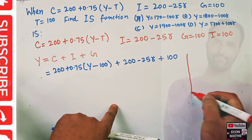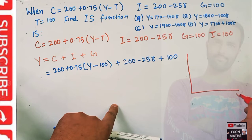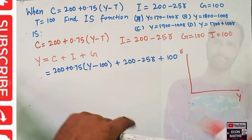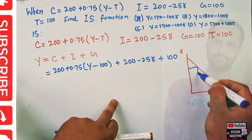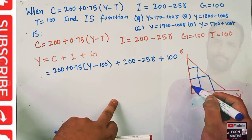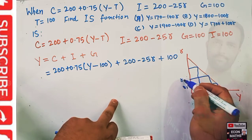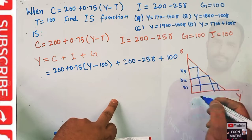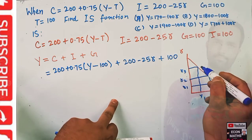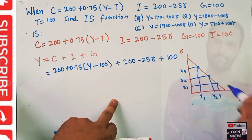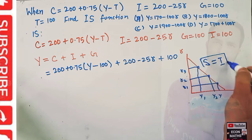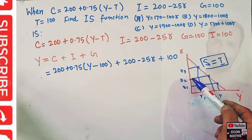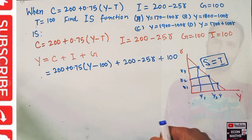The IS curve shows the level of income or GDP on the horizontal axis and rate of interest on the vertical axis. It has a negative slope and shows different combinations of rate of interest r1, r2, r3 and income levels y1, y2, y3 where savings equals investment.